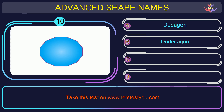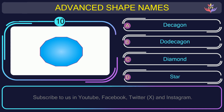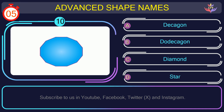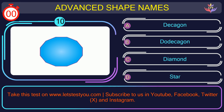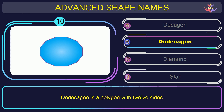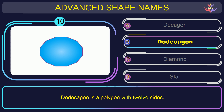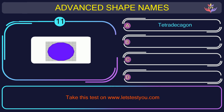Question number ten. Could you figure out the name of the shape in this picture? The correct answer is option B. Dodecagon. Dodecagon is a polygon with twelve sides.